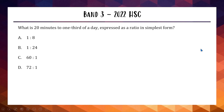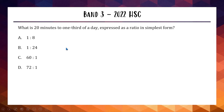Up next, another Band 3 from the 2022 HSC exam. What is 20 minutes to one third of a day expressed as a ratio in simplest form? To express a ratio, both parts need to be in the same units. We have 20 minutes on the left, so we need to figure out how many minutes are in one third of a day, then set up and simplify the ratio.